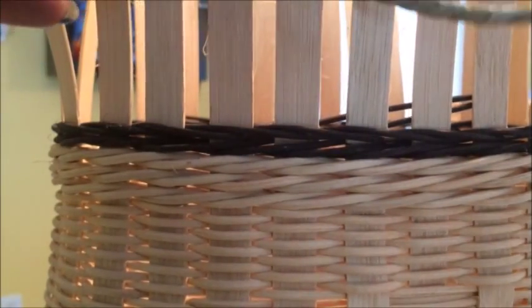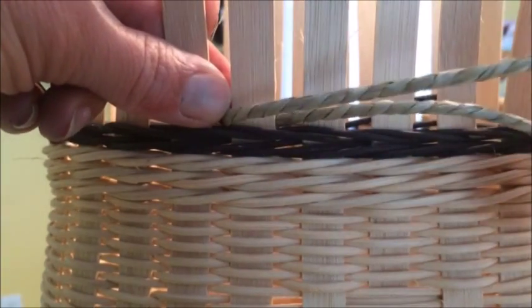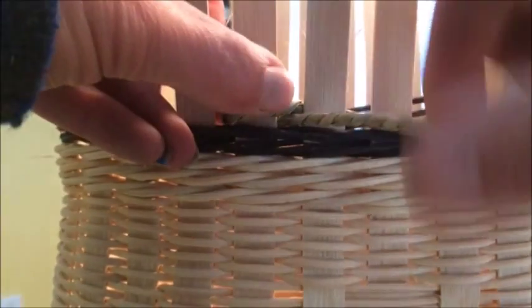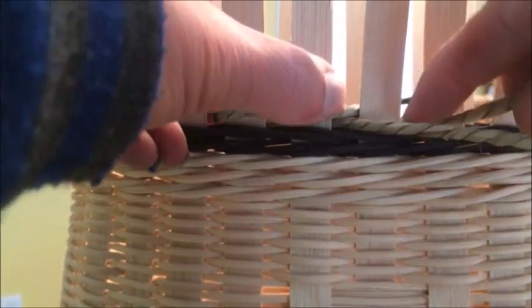You want to loop your seagrass, hook it onto a stake, take the piece in front and go behind. Now this is your piece in front, go behind the next one.